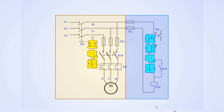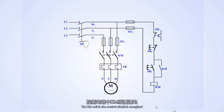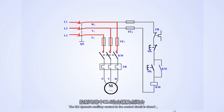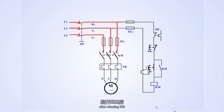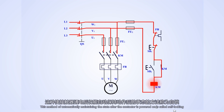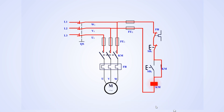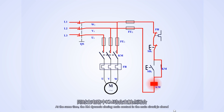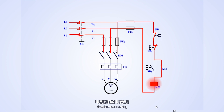Press SB2. The KM coil in the control circuit is energized. The KM dynamic auxiliary contact in the control circuit is closed. After releasing SB2, the KM coil is still energized — this method of automatically maintaining the state after the contactor is powered on is called self-locking. At the same time, the KM dynamic closing main contact in the main circuit is closed, and the electric motor runs.